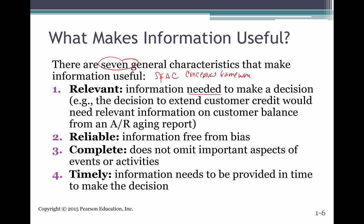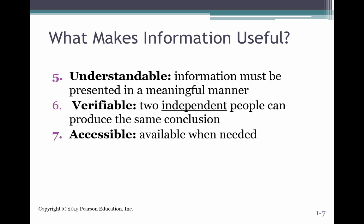Relevant — you need the information in order to make a decision. For example, you may want to extend credit to a customer, request payment, or know if you have to reorder a product and understand the cycle count. The information needs to be reliable — no bias. Completeness means it doesn't omit any aspect or event. Timely — you need the information prior to making the decision and may need several alternatives and more information to make that decision.